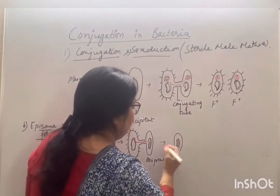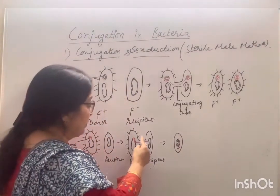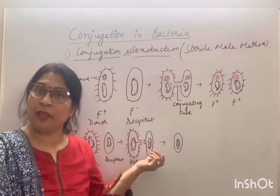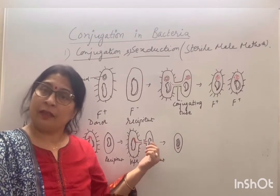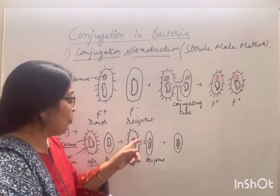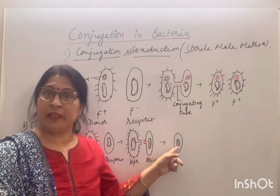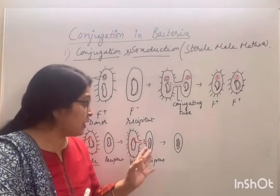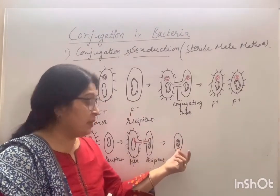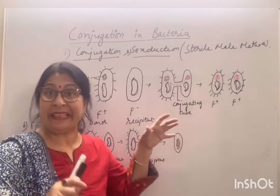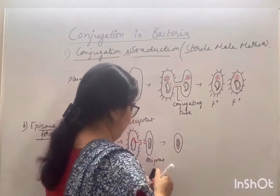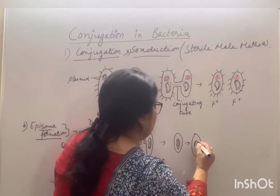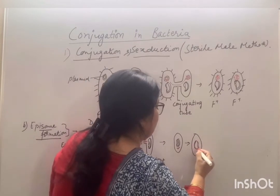If the conjugating tube dissolves partway through, transfer stops. Only a small amount of genetic material has already been transferred. After partial transfer, if the conjugating tube disrupts or dissolves, no further transfer occurs. The partial genetic material that did enter the recipient does not contain the full fertility factor, so sex pili will not develop.